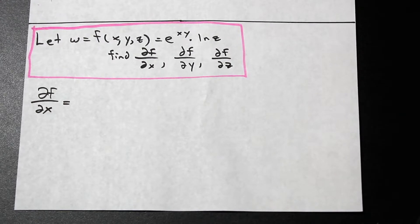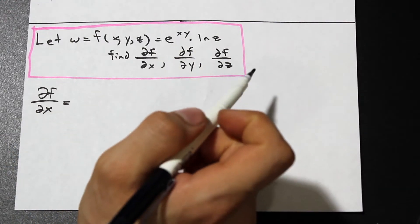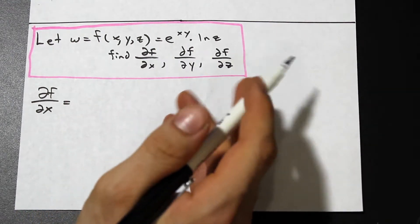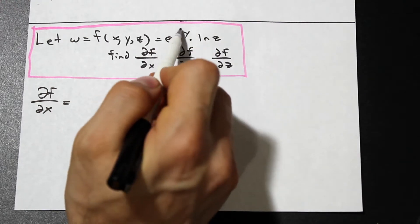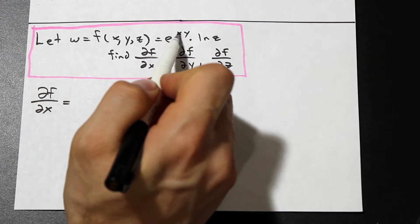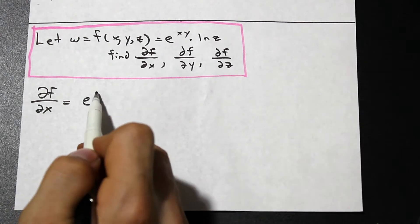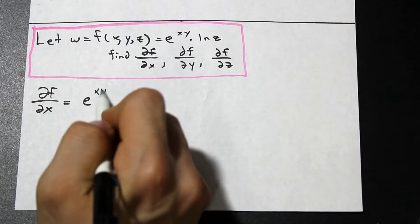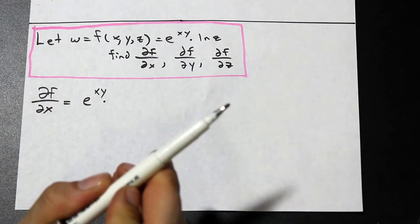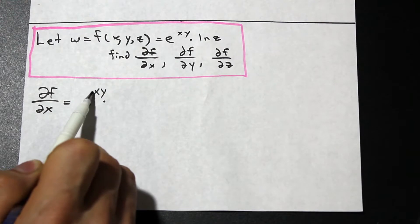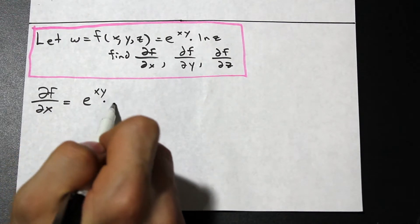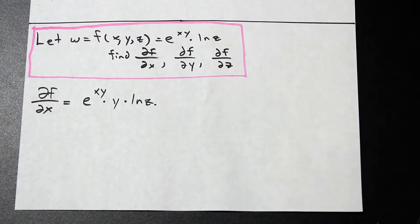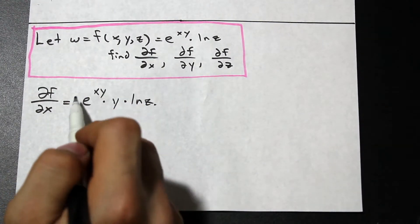With three variables instead of two, it's exactly the same idea — anything that's not x is a constant. We have e to the xy and we'll use the chain rule: the derivative of e to the xy is e to the xy times the derivative of the inner function xy with respect to x. Since y is constant, the derivative of xy with respect to x is just y. Then ln(z) is a constant, so it stays. The result is y times e to the xy times ln(z).